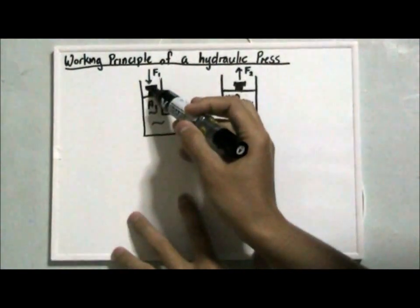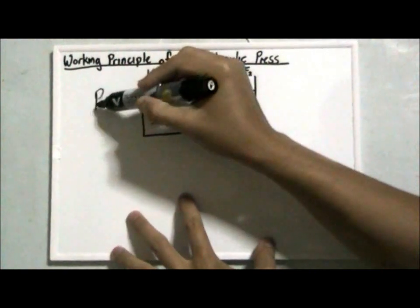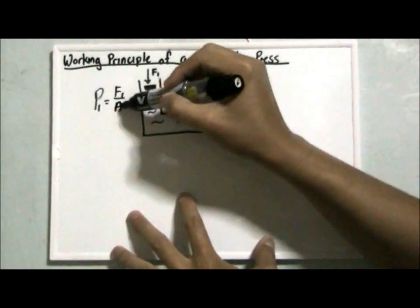The pressure exerted by the piston on the liquid here will be P1 equals F1 over A1.